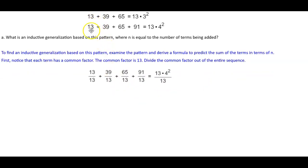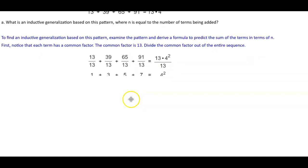We're going to divide 13 divided by 13, 39 divided by 13, 65 divided by 13, 91 divided by 13, and 13 times 4 squared divided by 13. We end up getting 1 plus 3 plus 5 plus 7, which is equal to 4 squared.